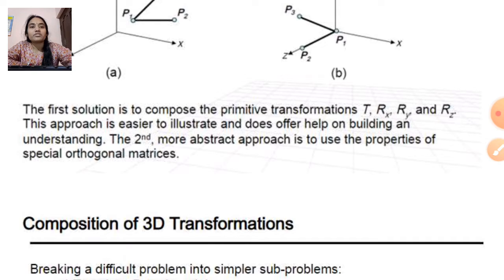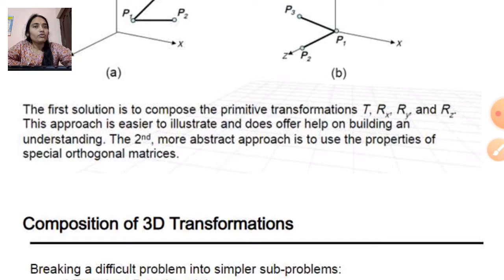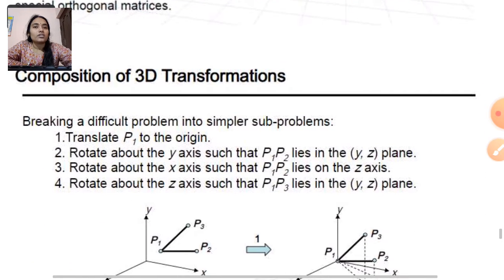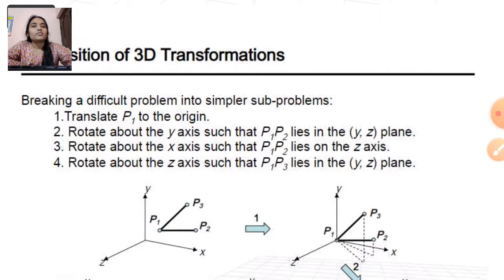The second, more abstract approach is to use the properties of spatial orthogonal matrices. We will focus on how to translate it and how to rotate it — all these things we will discuss here. This one is our question; now we can solve it.